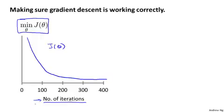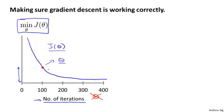Notice that the x-axis is number of iterations. Previously, we were looking at plots of J of theta where the horizontal axis was the parameter vector theta — but this is not what this is. Concretely, I'm going to run gradient descent for 100 iterations, and whatever value I get for theta after 100 iterations, I'm going to evaluate the cost function J of theta for that value. This vertical height is the value of J of theta after 100 iterations of gradient descent. So what this plot is showing is the value of your cost function after each iteration of gradient descent, and if gradient descent is working properly, then J of theta should decrease after every iteration.